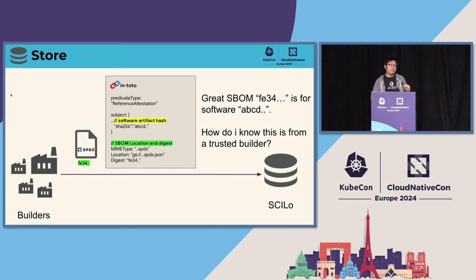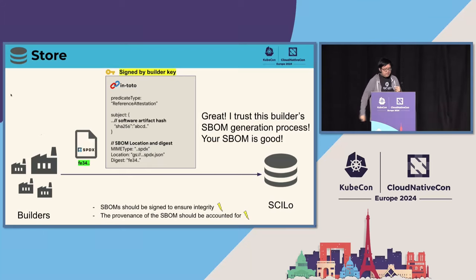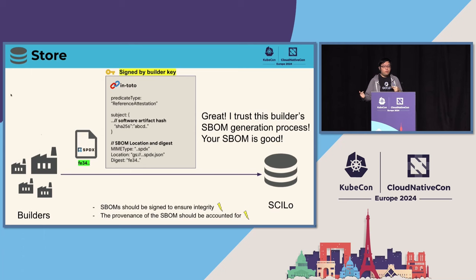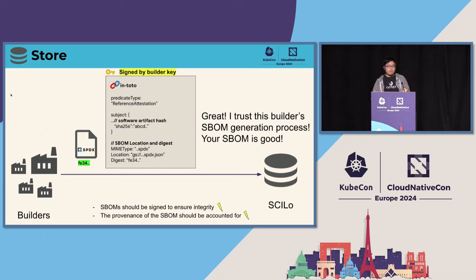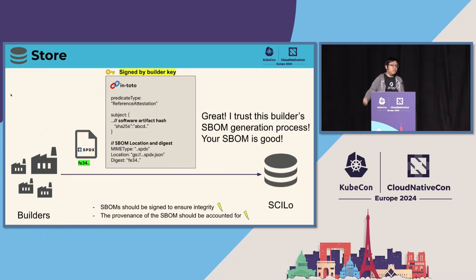We're still missing something: how do I know whether this SBOM was generated by the builder, or did someone just download files, run SIFT, and upload it to SILO? This is where we do the same as in SLSA — we sign the attestation, and the signature is validated by SILO. This gives us two properties: one, the SBOMs hold their integrity — we know they haven't been tampered with since they left the builder. Two, we know all SBOMs come from an approved builder, because they were signed by a builder key whose SBOM generation process we've vetted.